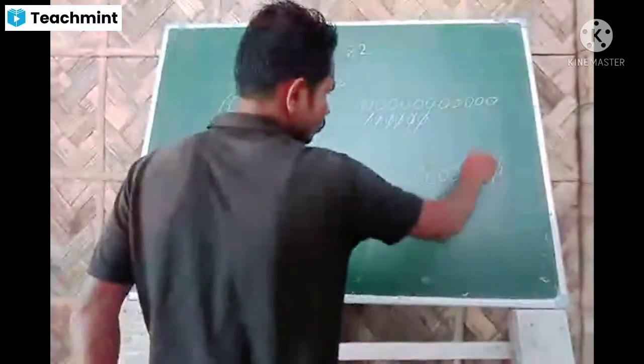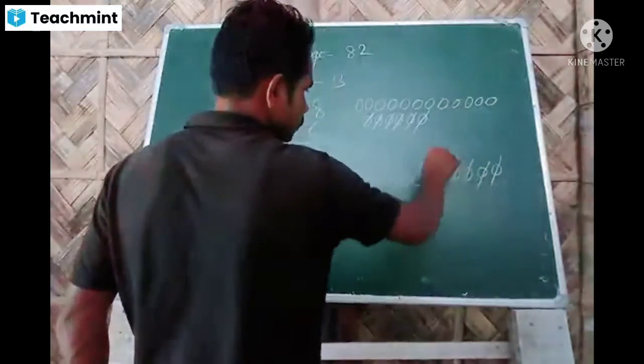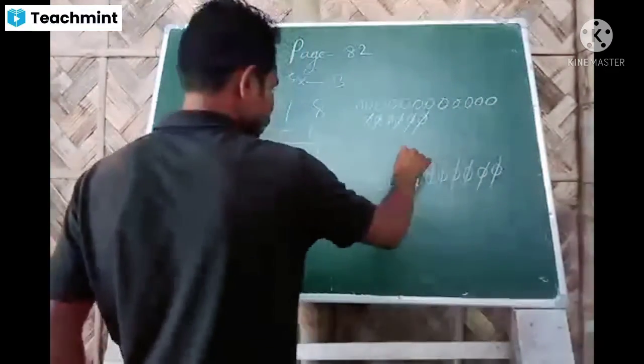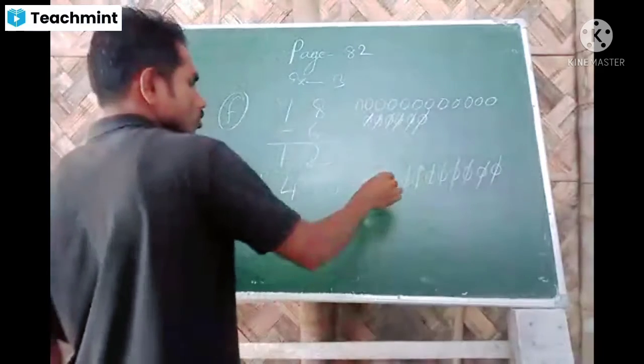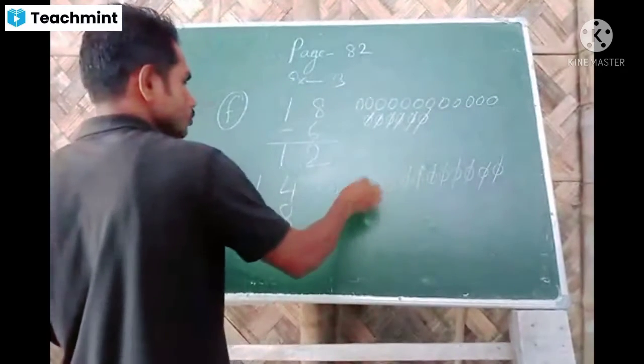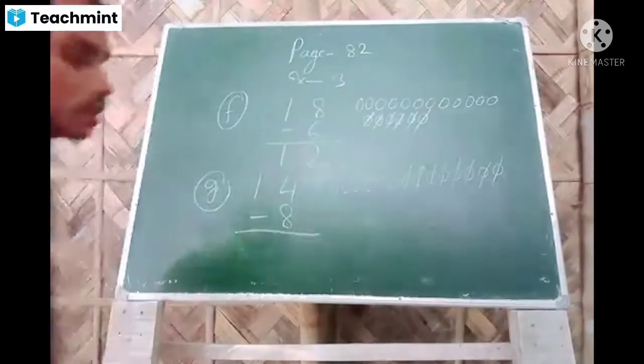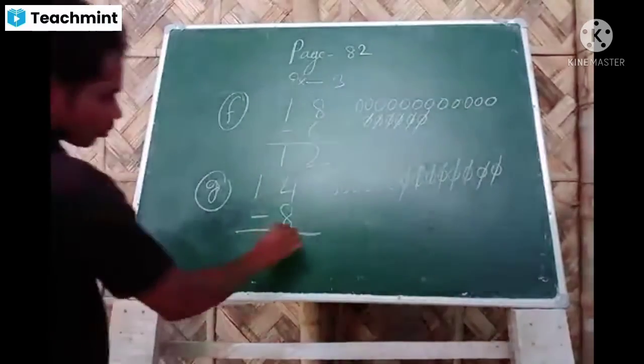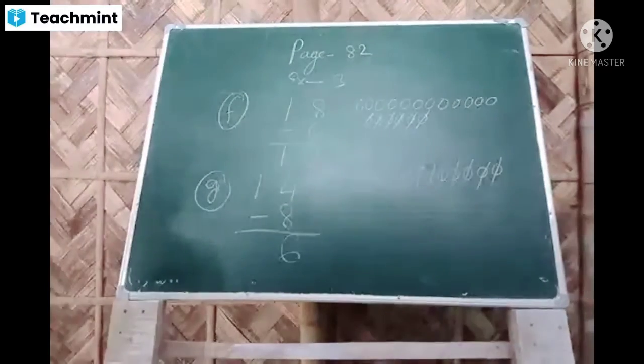1, 2, 3, 4, 5, 6, 7, 8. Now you have to count like this. 1, 2, 3, 4, 5, 6. 6, 6. The answer is 6. Like this you have to do, okay?